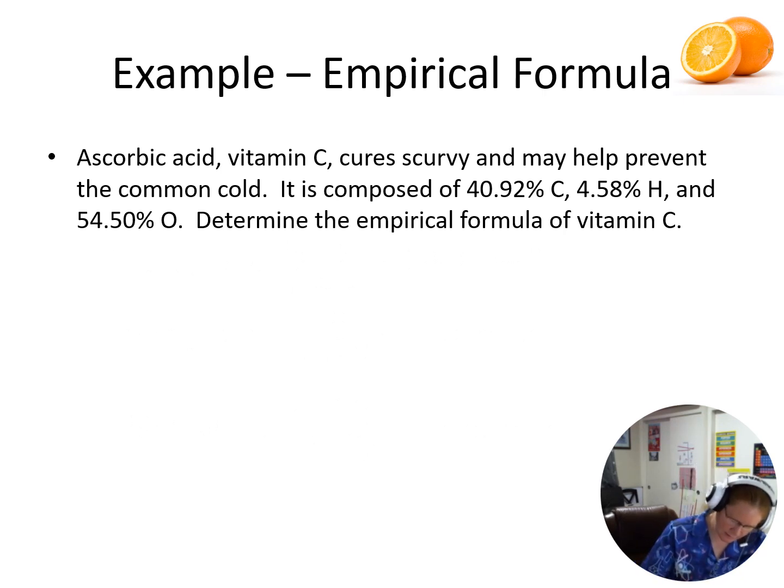So we get... So I have these numbers here, 3.41 is the smaller number, so we'll divide each of these by the 3.41. And we're going to get this. We're going to get CH1.33O.